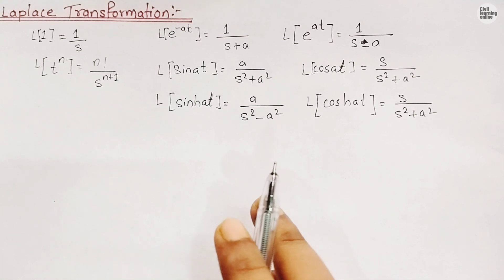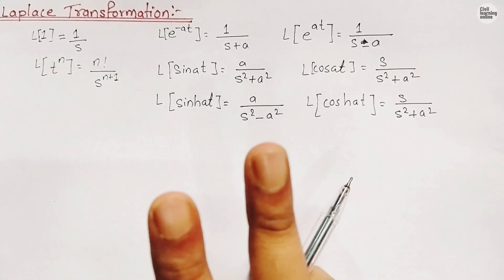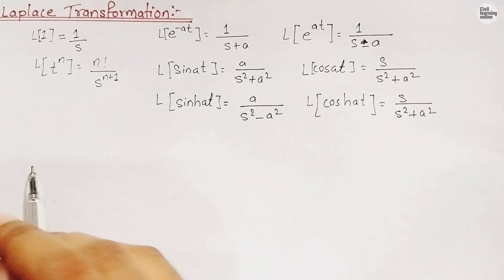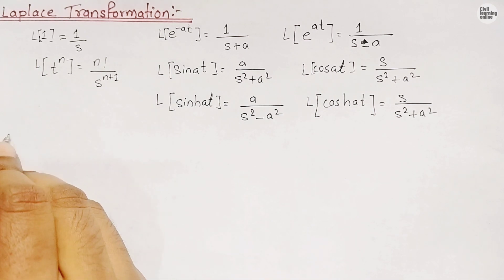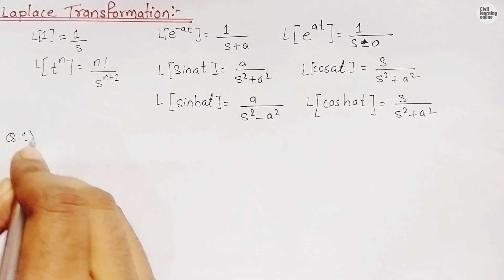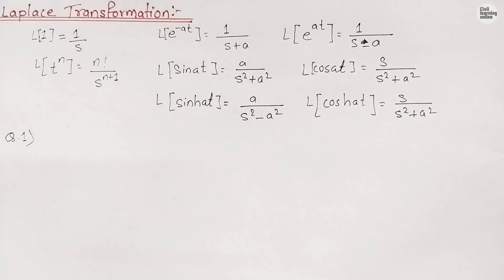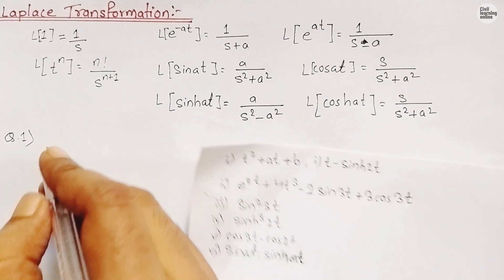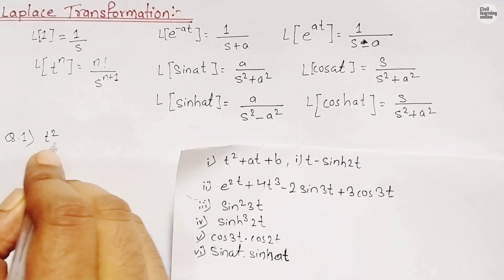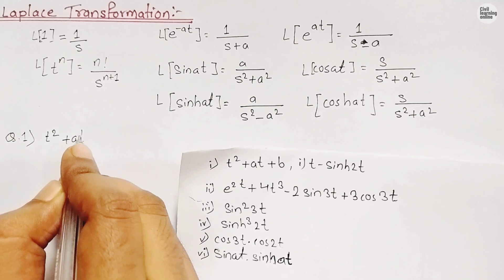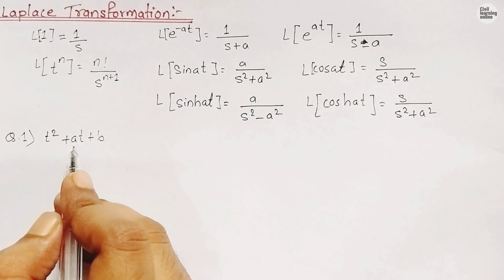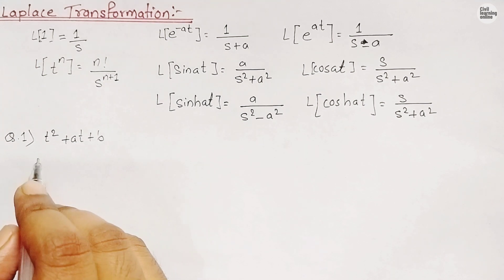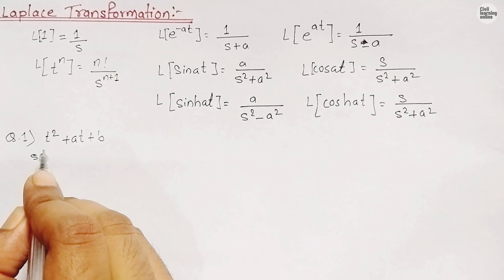In an exam you could be asked two-mark numerical examples similar to what I am going to show now. Let's see some examples. Question number one: find the Laplace transformation of t² + at + b.